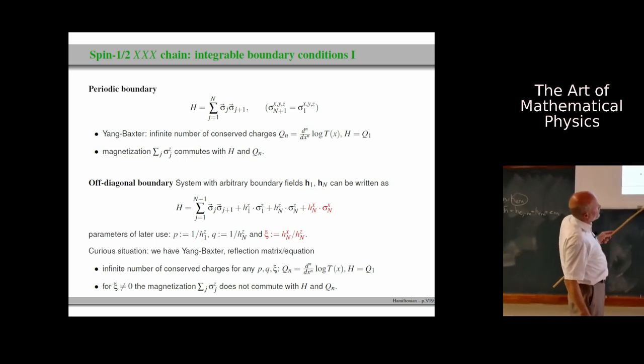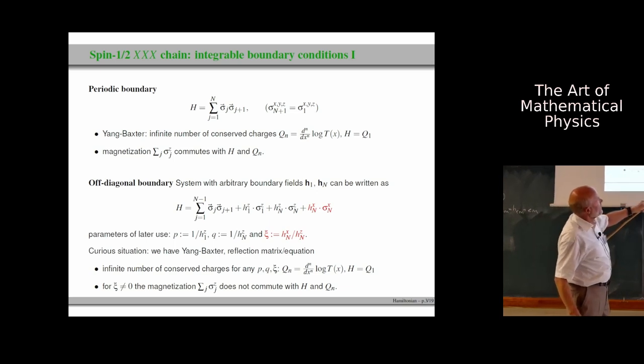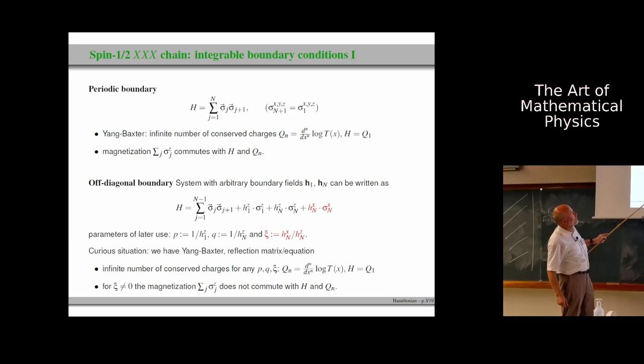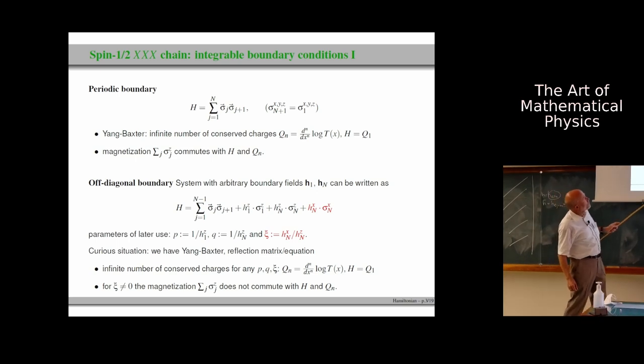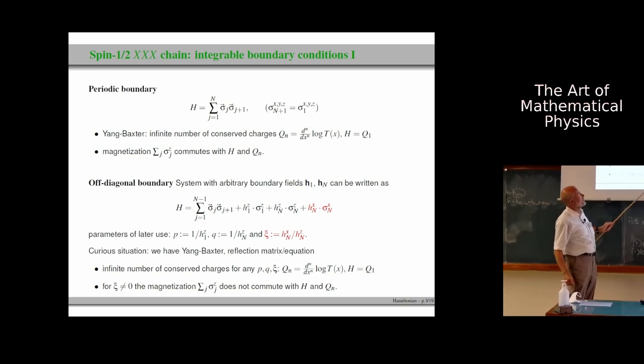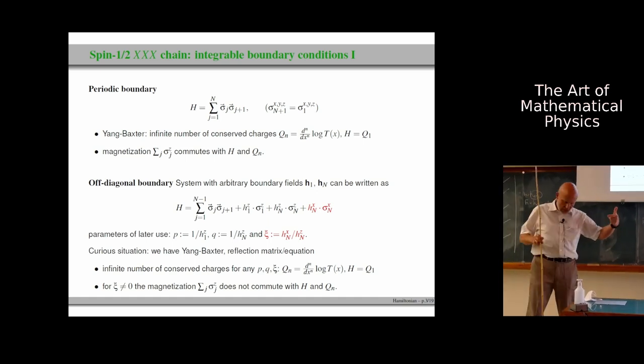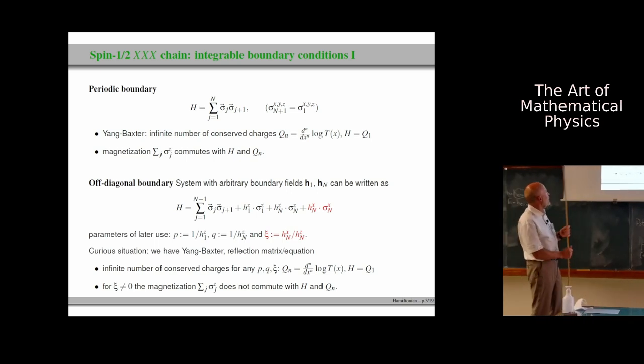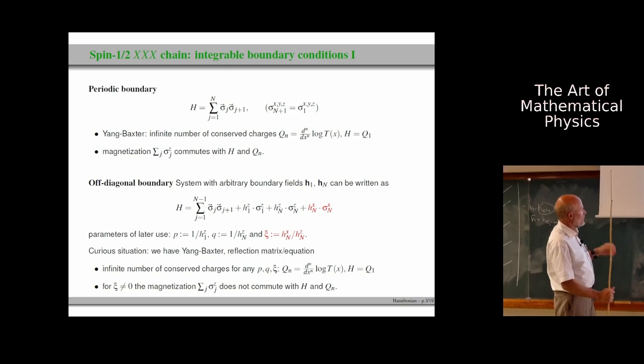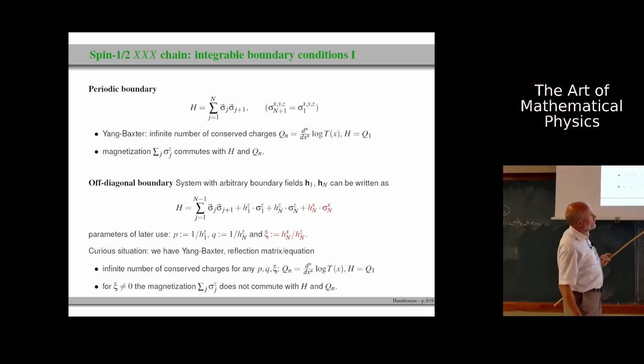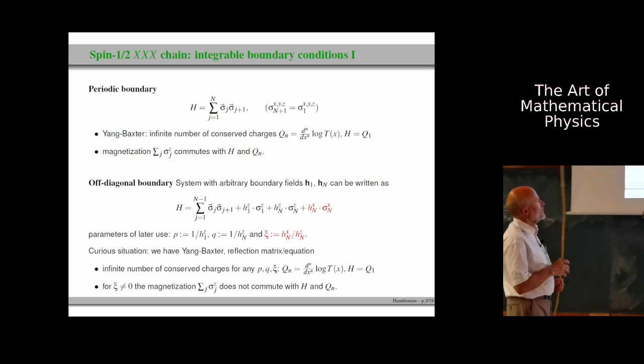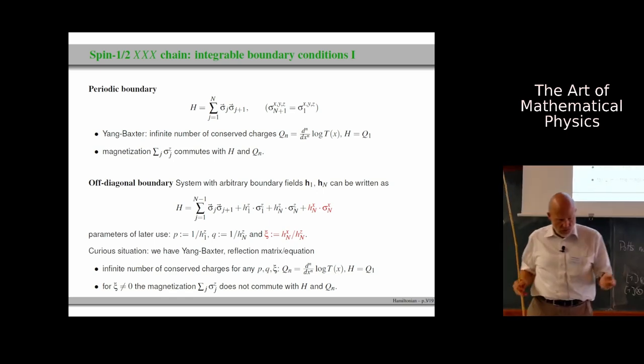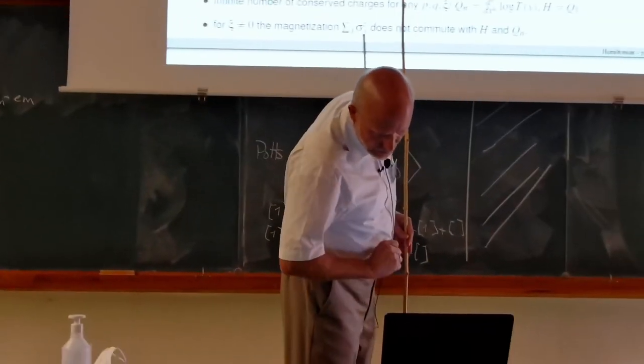Despite these fields at the boundary and despite this transversal component, we have this curious situation that, in addition to Yang-Baxter, we have the reflection matrix and the reflection equation. And we can set up for a commuting family of transfer matrices, which generates an involution and infinitely many conserved quantities. These fields are replaced by the numbers P and Q. So whenever I talk about P and Q, I mean the reciprocals of the longitudinal components. And when I talk about xi, this is the ratio of the transversal part to the longitudinal part of the boundary field on site n. We have infinitely many conserved quantities for arbitrary values P, Q, and xi. But the magnetization operator does not commute with H and Qn for finite value of xi.